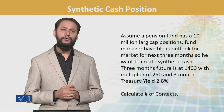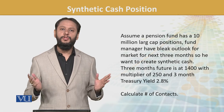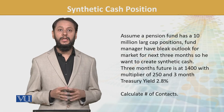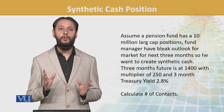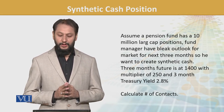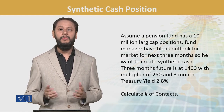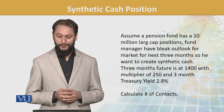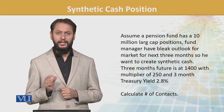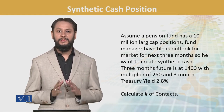A fund manager has a bleak outlook for the market for the next three months — he is not very bullish. He thinks the market will crash or not perform well, so he is worried. Three-month futures are trading at 1400, with a multiplier of 250. The three-month treasury bill yield is 2.8%. First, let's grasp what we have: a portfolio of 10 million in shares.